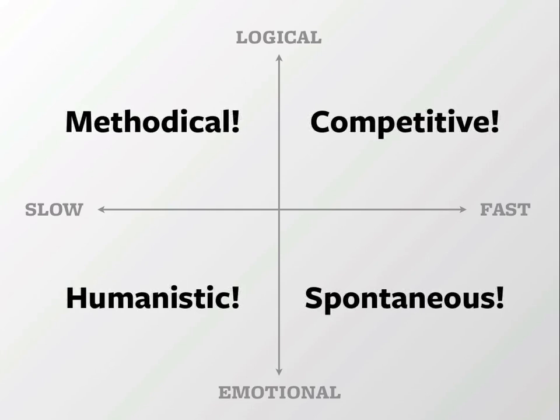At the very least, be thinking about each of these people as you go through the process, so you can make intelligent decisions about what to include and what to leave out. Sometimes it's not possible to appeal to everyone, but when you're not, you should know exactly what you're missing so you can address it in other ways.